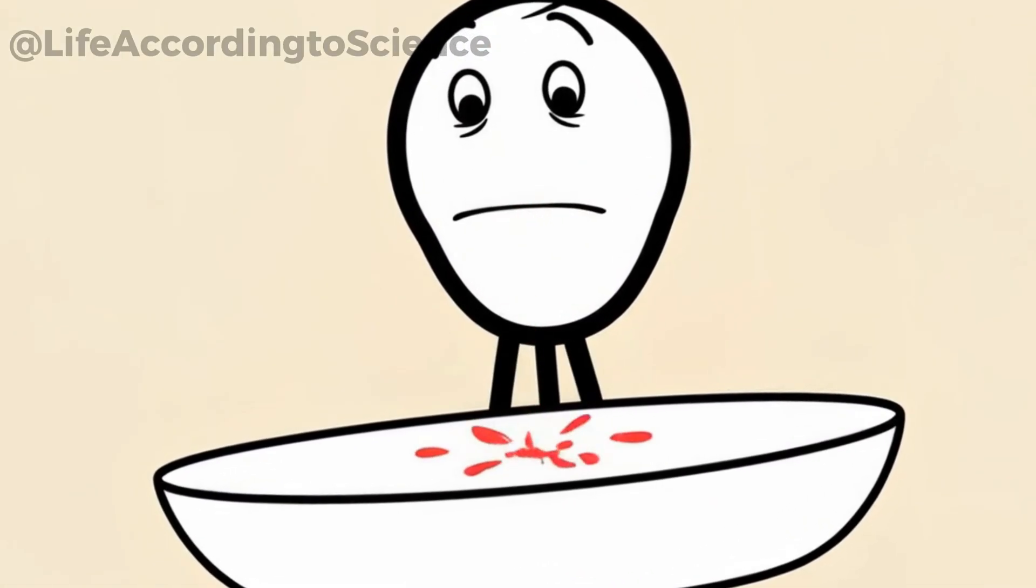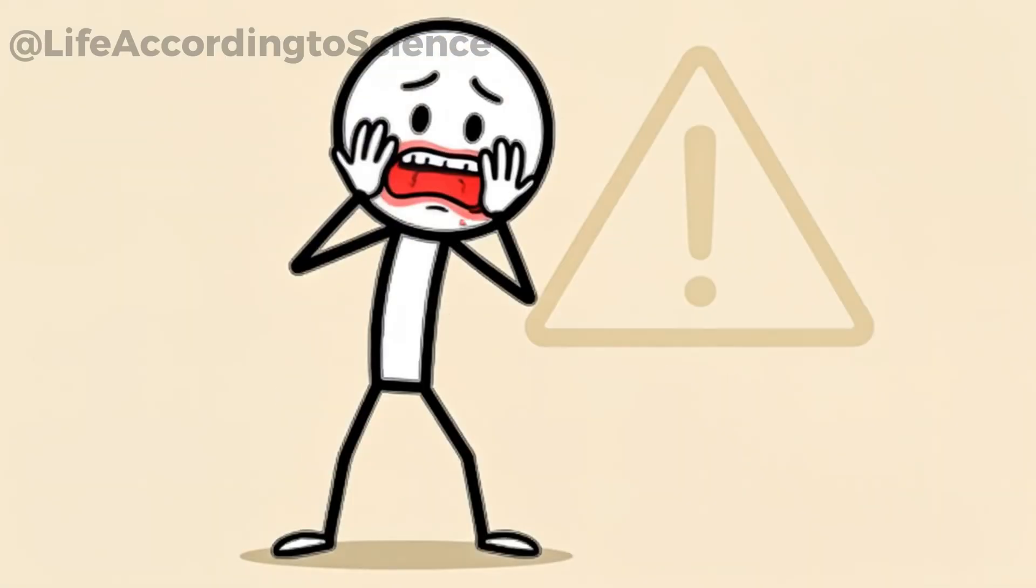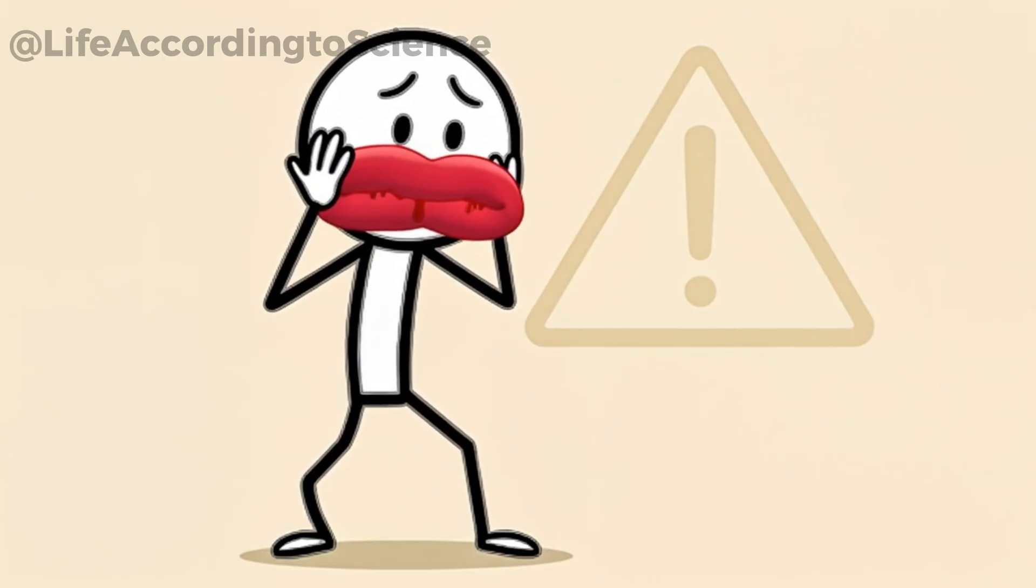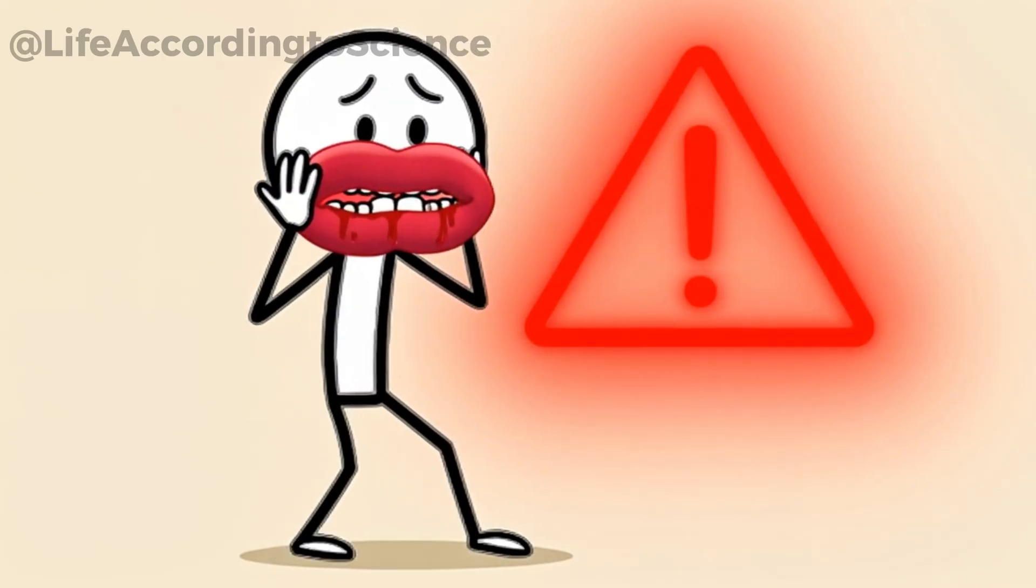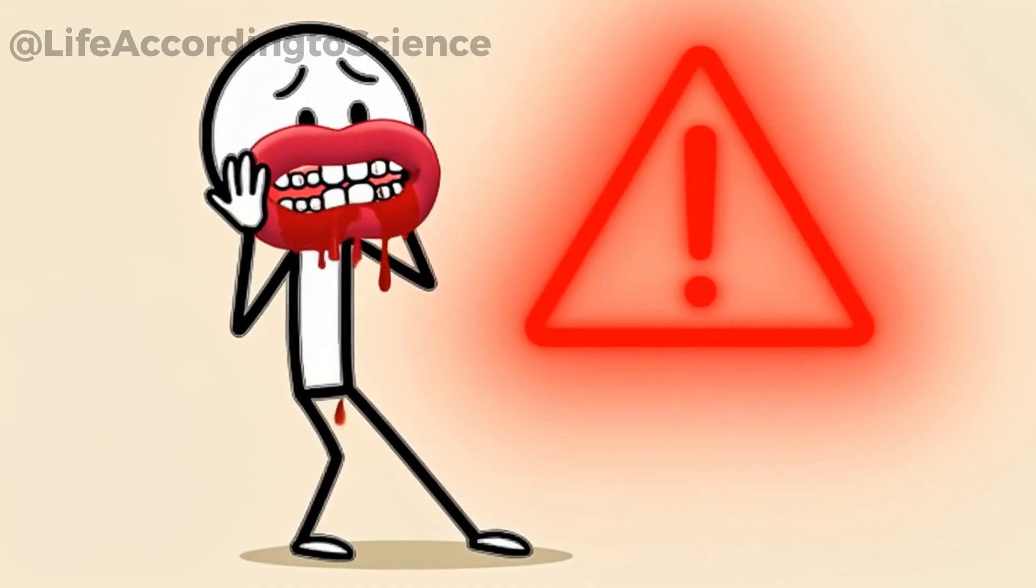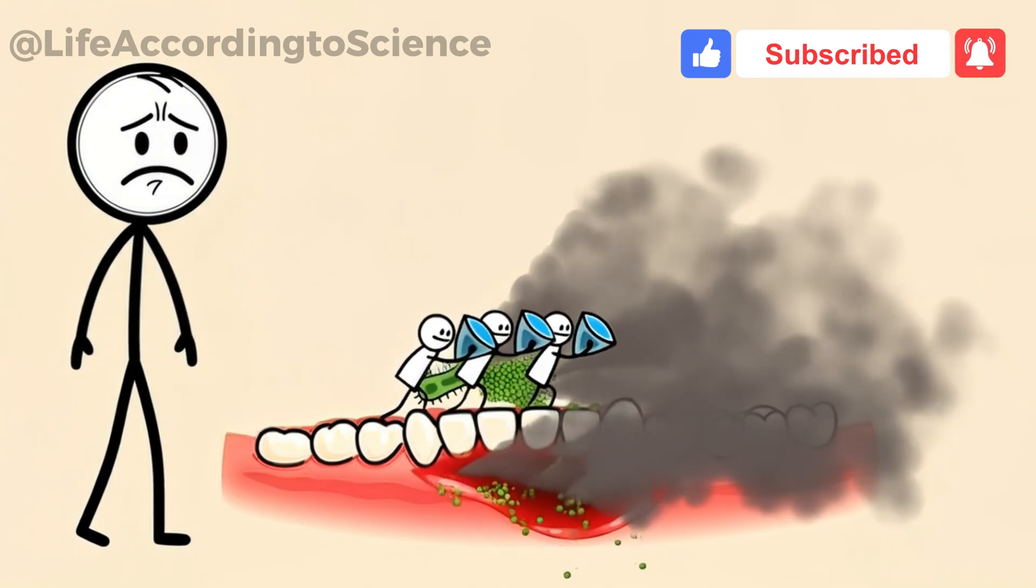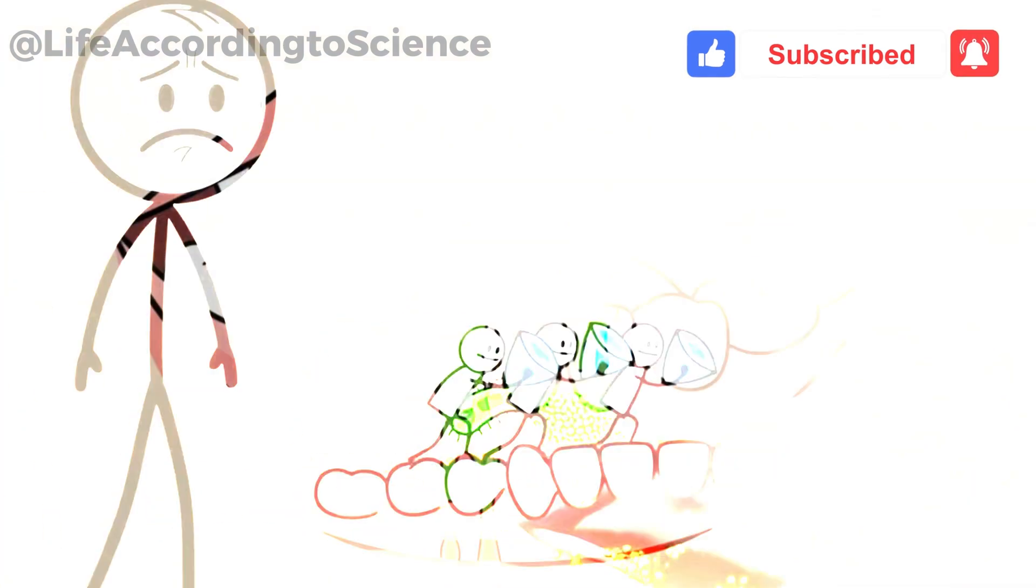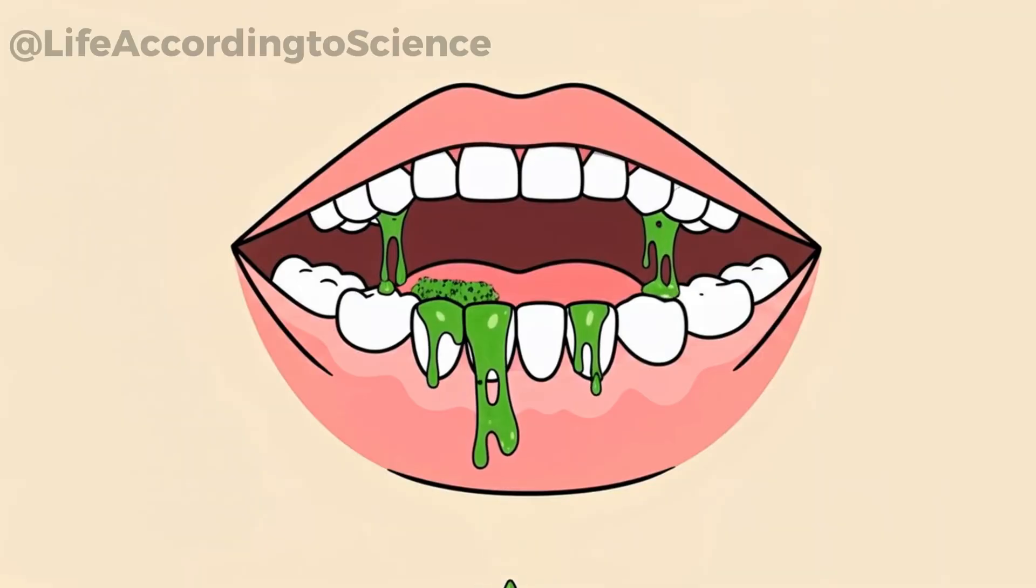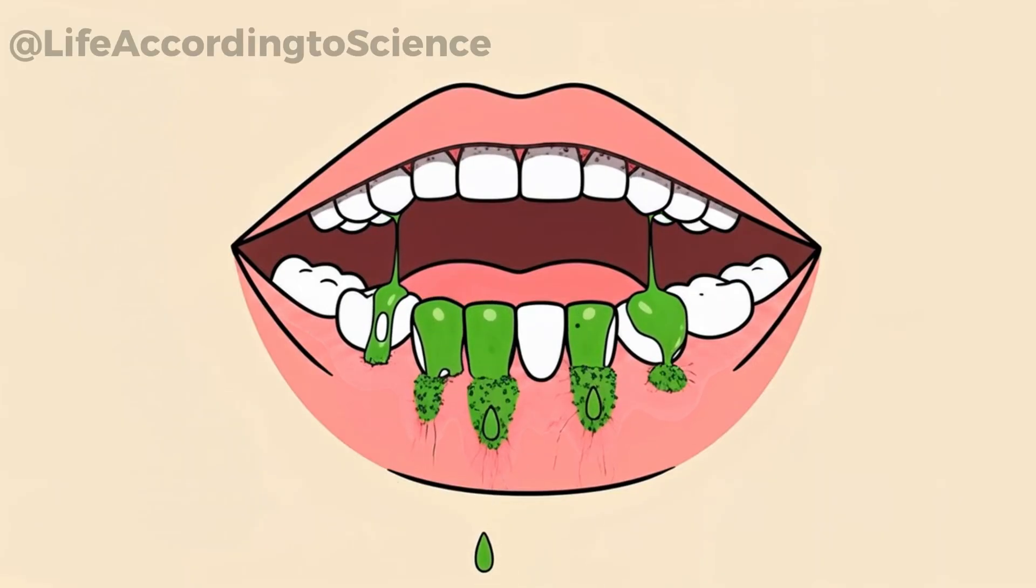After weeks without brushing, your gums begin to swell and bleed easily. This is gingivitis, the earliest stage of gum disease. It's your body waving a red flag, trying to warn you before things get worse. The inflammation happens because your immune system is constantly battling the bacterial invasion. While it's fighting, the bacteria are releasing toxins that destroy gum tissue little by little.